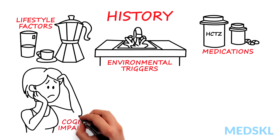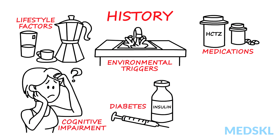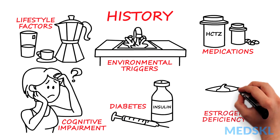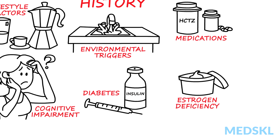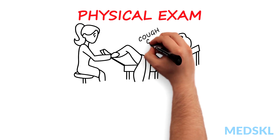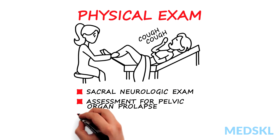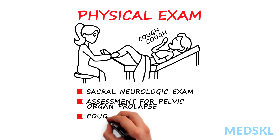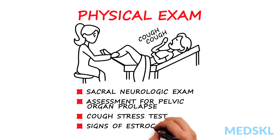Cognitive impairment and diabetes can influence OAB symptoms. Estrogen deficiency worsens OAB symptoms, so menopausal status and hormone use are important to note. Physical examination includes a screening sacral neurologic examination, an assessment for pelvic organ prolapse, and a cough stress test to rule out stress urinary incontinence. On pelvic exam, look for signs of estrogen deficiency.